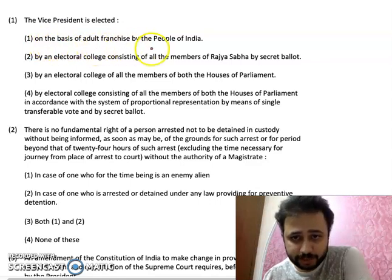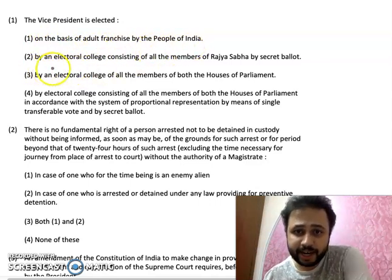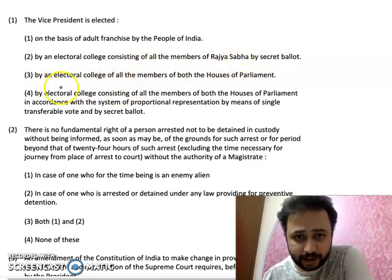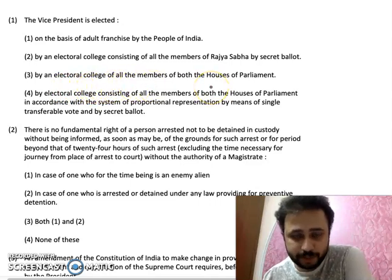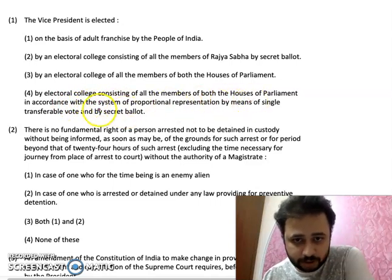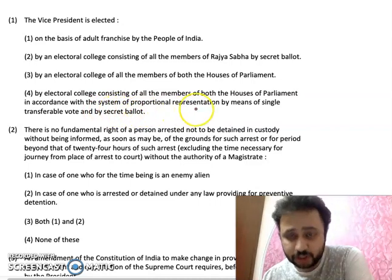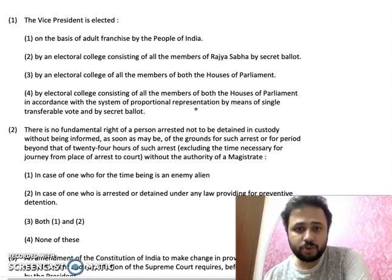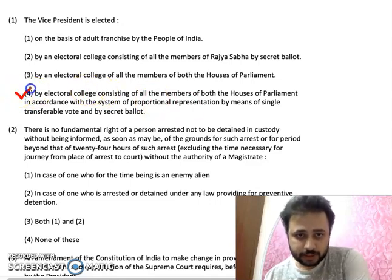Option two: by an electoral college consisting of all the members of Rajya Sabha by secret ballot. Option three: by an electoral college of all the members of both the houses of Parliament. Option four: by an electoral college consisting of all the members of both the houses of Parliament in accordance with the system of proportional representation by means of single transferable vote and by secret ballot. The right answer is option 4.